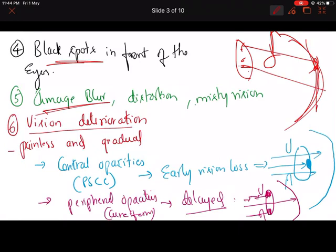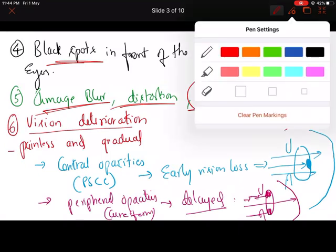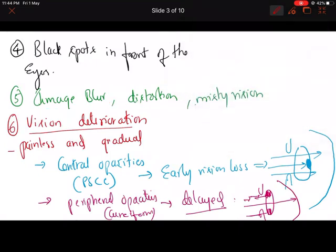The patient can also have blurred, distorted, or misty vision — as if walking through fog or clouds, sometimes called cloudy vision. Patients may describe it as 'dhundla dikhna.' The next important symptom is painless and gradual diminution of vision. There is no pain, and the vision loss is very gradual. We must differentiate between central opacities and peripheral opacities.